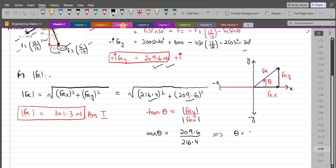So theta equals tan inverse of 209.6 over 216.4. If you take the tan inverse of this value, the angle theta comes out to be 44.1 degrees. So this is our second answer.